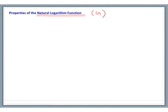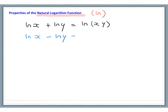For instance, ln of x plus ln of y equals ln of xy. If we have ln of x subtract ln of y, this equals ln of x over y. And if we have ln of x to the power of a, the power a can come down to the front, giving us a multiplied by ln x.